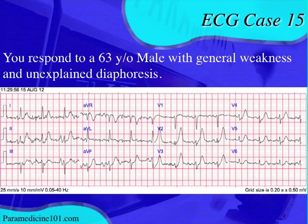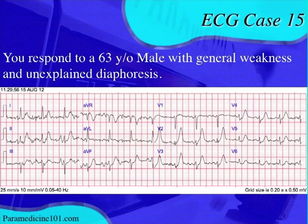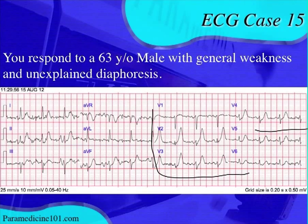The J point depression along with the broad-base, tall, symmetrical T wave is called Winter's T waves. Winter's T waves are indicative of an acute MI, most specifically found in the anterior leads, indicating an early anterior wall MI. So when you see these tall symmetrical broad-base T waves with J point depression, you have to think this patient may be having an MI — and the diaphoresis is now explained.